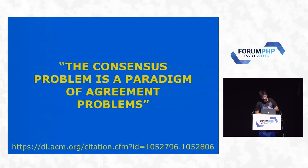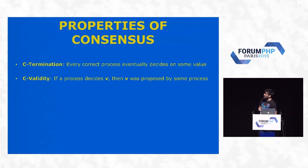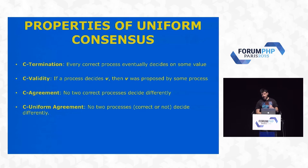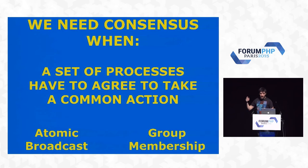What's consensus anyway? The consensus problem is a paradigm of agreement problems. It has properties: termination — every correct process eventually decides on some value; validity — if a process decides V, then V was proposed by some process (you cannot elect someone who was never proposed); and agreement — no two correct processes decide differently. With uniform consensus, even processes that crashed eventually reach the same decision. When do we need consensus? When a set of processes have to agree to take a common action, for example atomic broadcast, group membership, or deciding whether to commit something to the file system.